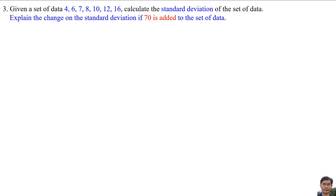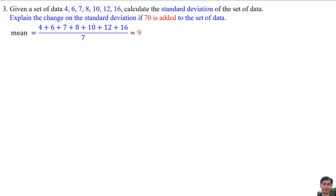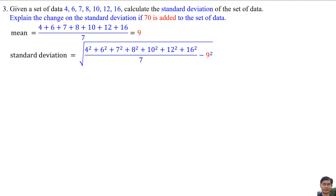Question number 3. Given a set of data: 4, 6, 7, 8, 10, 12, and 16. Calculate the standard deviation of the set of data. In order to find the standard deviation, we need to find the mean. The mean equals the average of the set of data, that is 9. Standard deviation equals the square root of variance. We square all the numbers, add all of them, divide by the total number of data — that is 7 — minus the mean squared, then take the square root. We get 3.742.